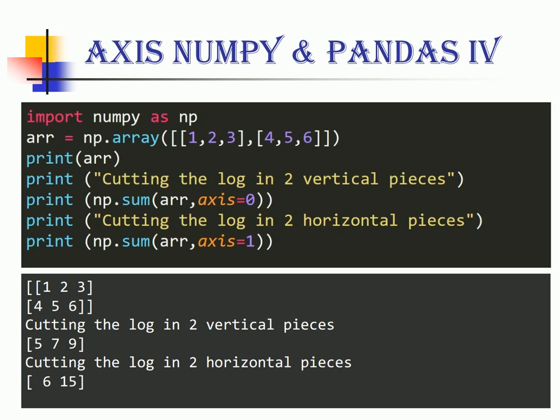Think of it as chopping the log into three vertical pieces and then finding the sum of each piece. Thus if you consider the first column which is one and four, I calculate the sum which is five. Similarly the sum of the second column is seven and the third column is nine. This is how you get the sum function when you do axis equal to zero.